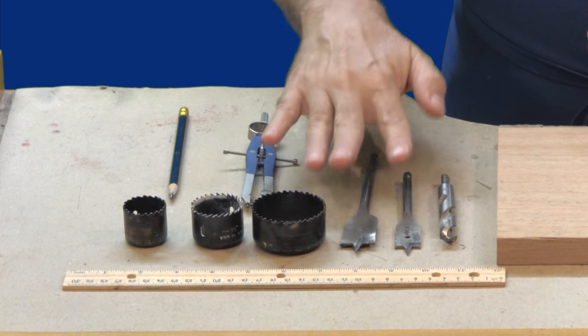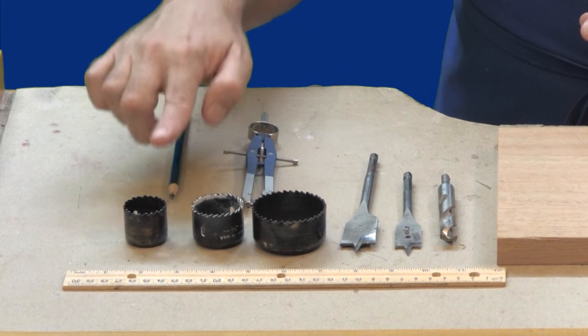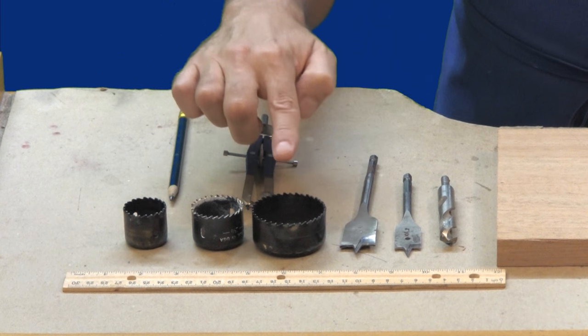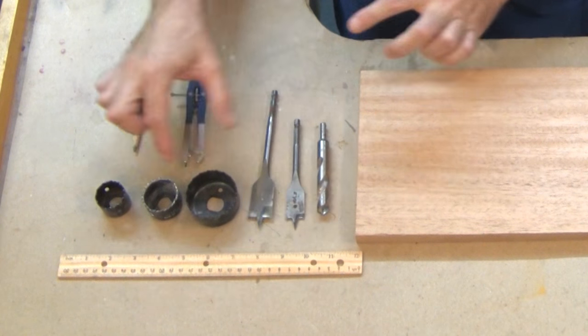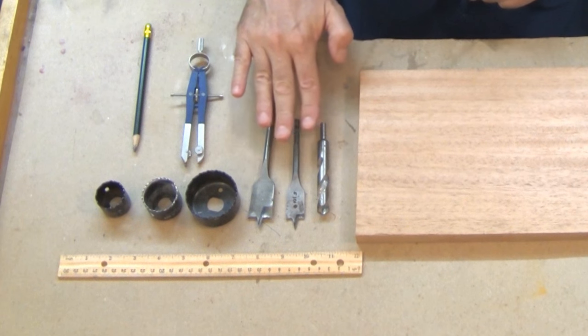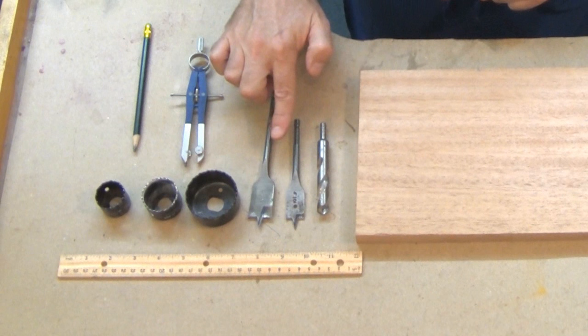And of course, you're going to need a variety of drill bits. I have a one and a quarter, one and a half, and two and an eighth hole cutter. Hole cutters are great for this project. I also have a one inch and a three quarter inch spade bit and a half inch twist bit.